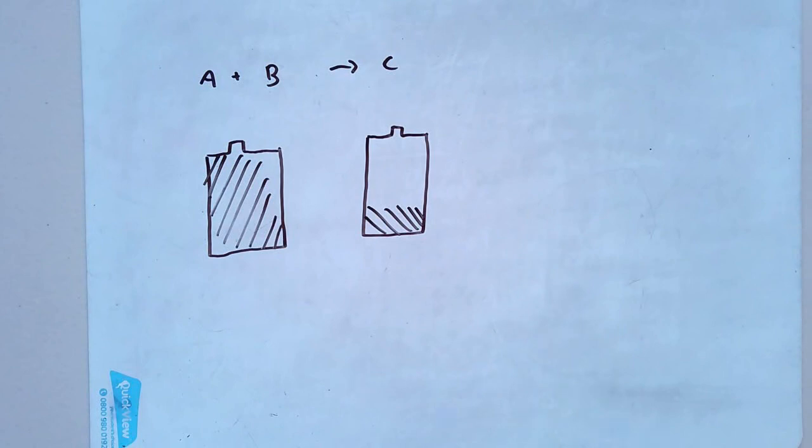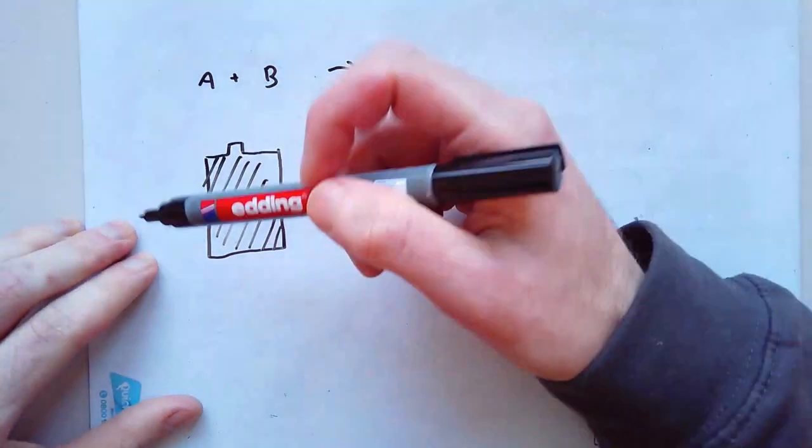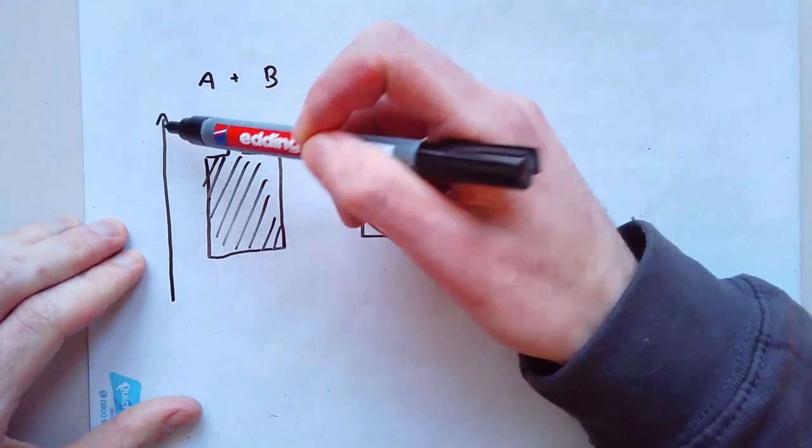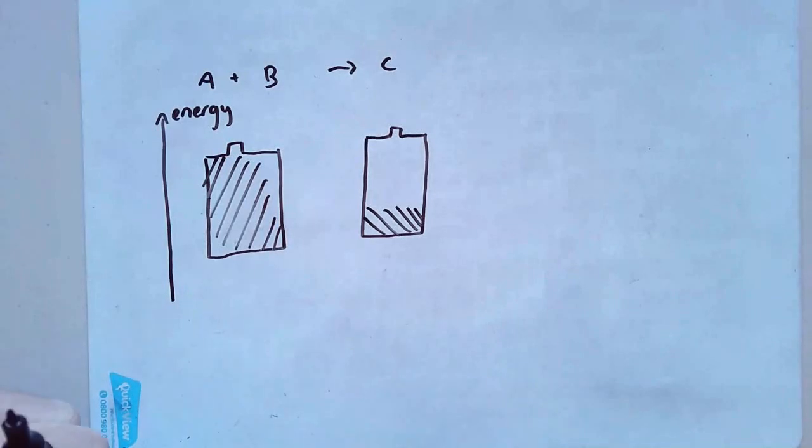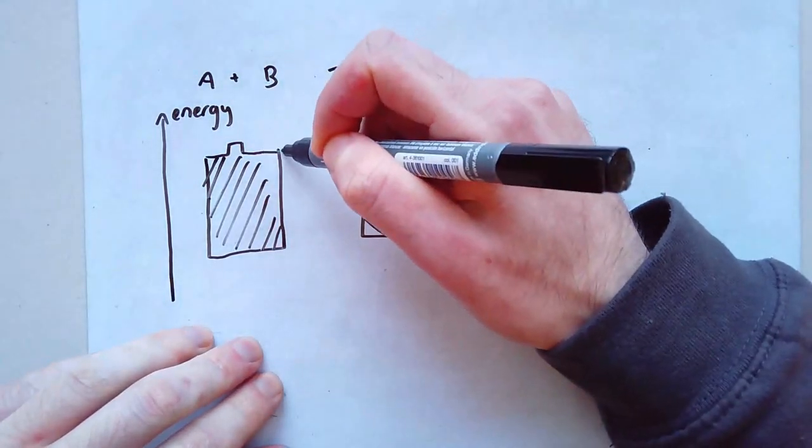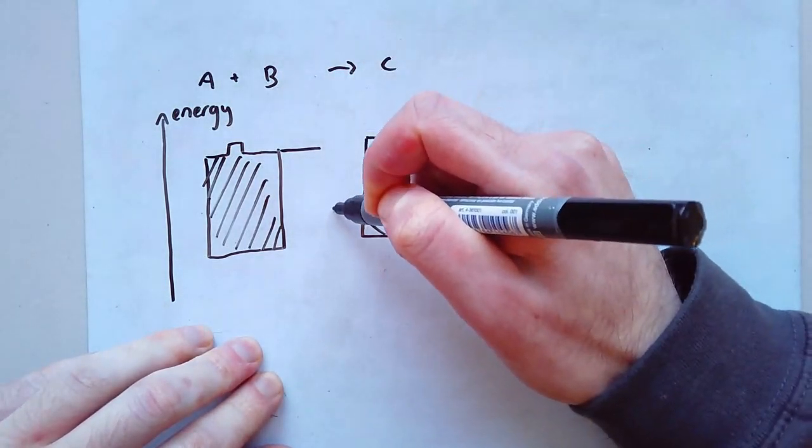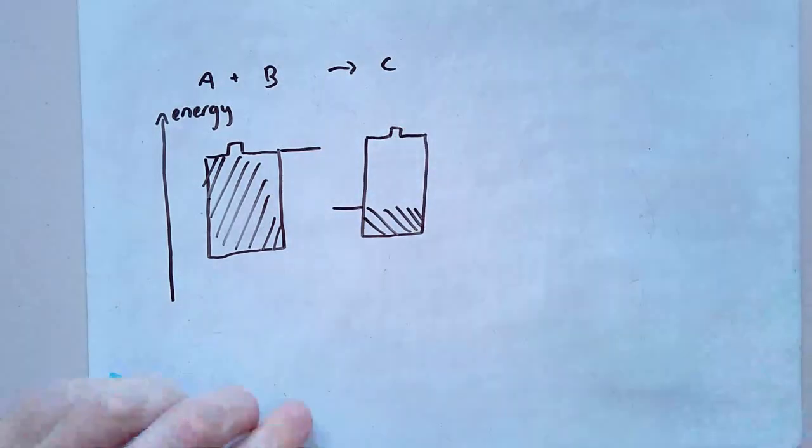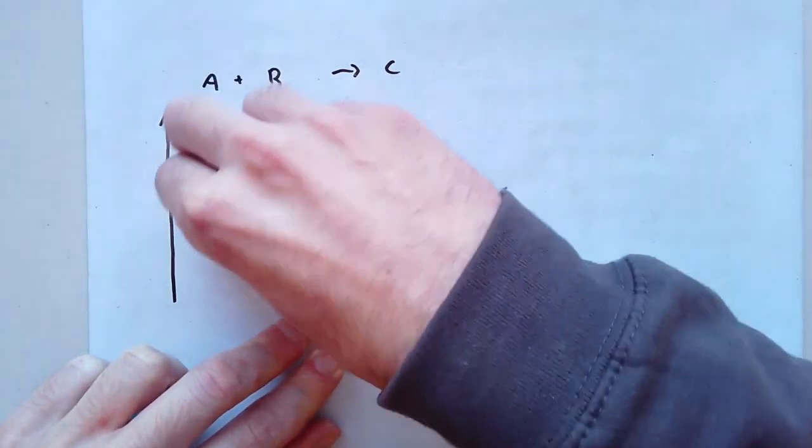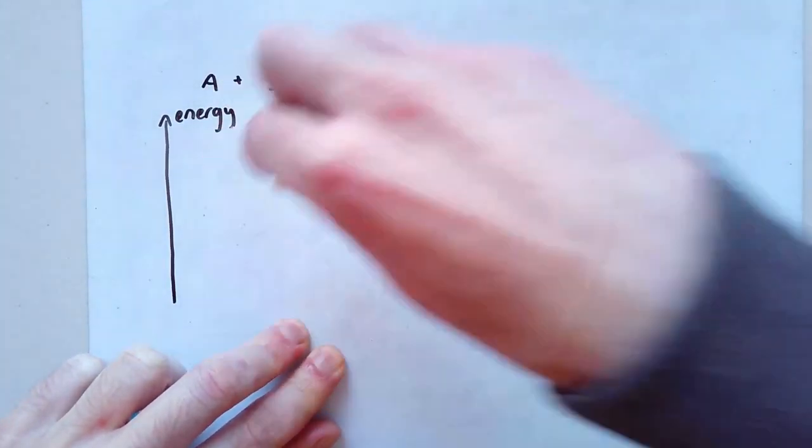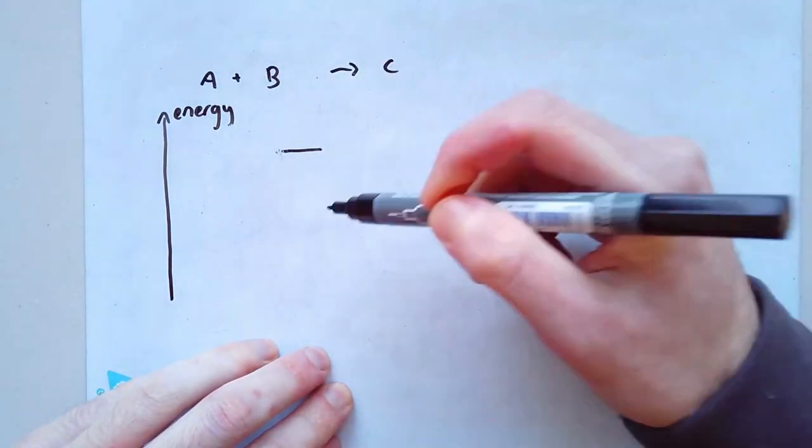Now in a sense what we do is we're just going to turn these little diagrams into a graph. So let's say I had a graph and my y axis here was just energy. I'm looking for the amount of energy that something's got. So A and B have an amount of energy up to there. C has an amount of energy just over there. And while I do this I'll now rub out the batteries. So I've got these kind of two points where I've got A and B up here and I've got C down here.